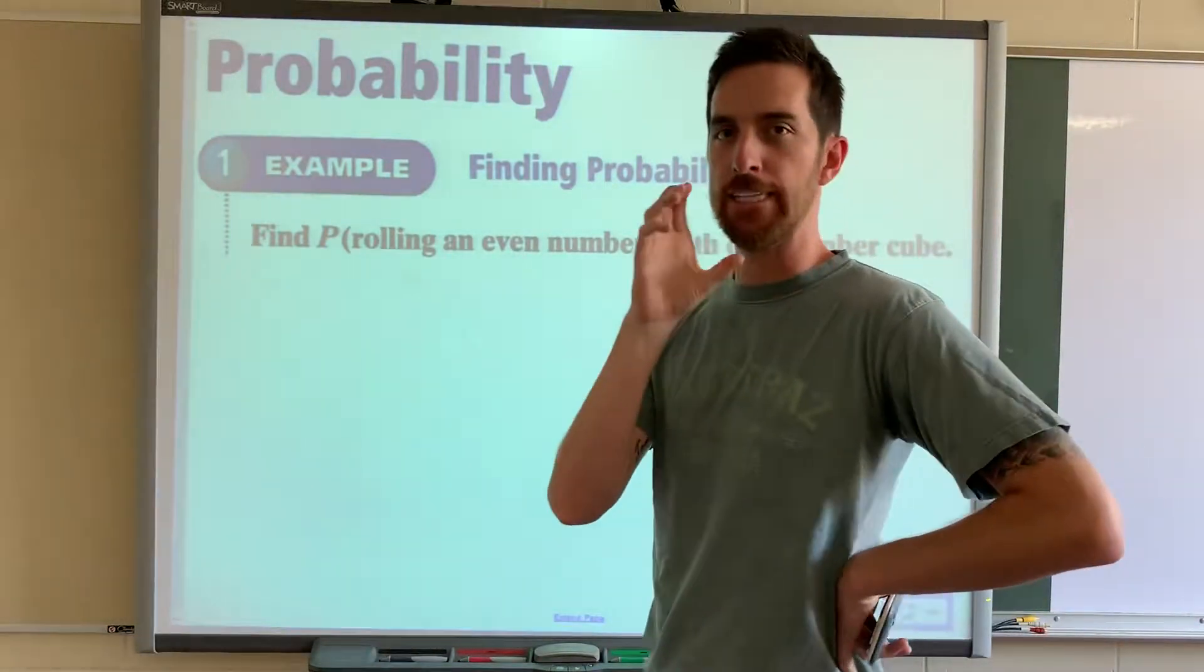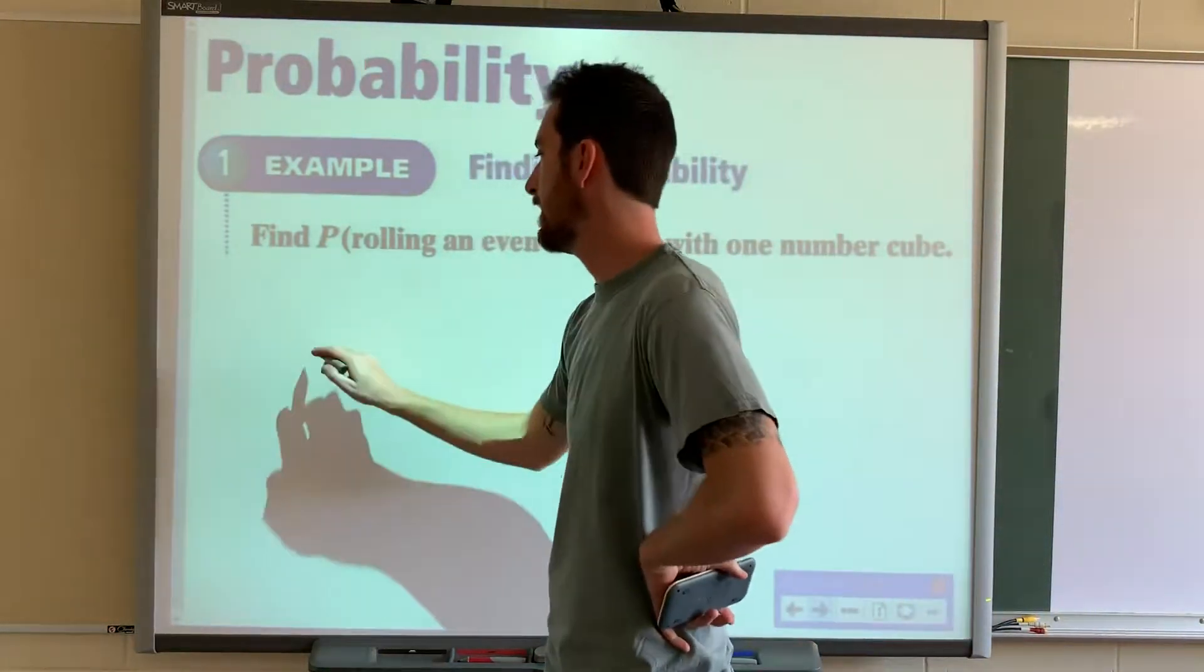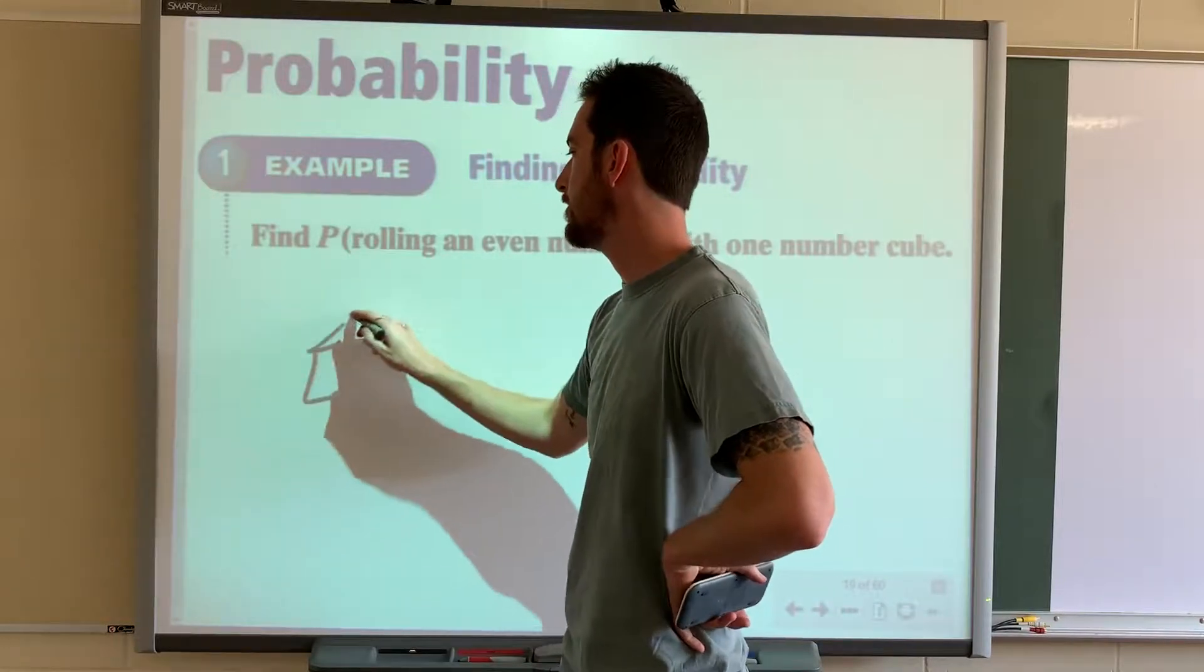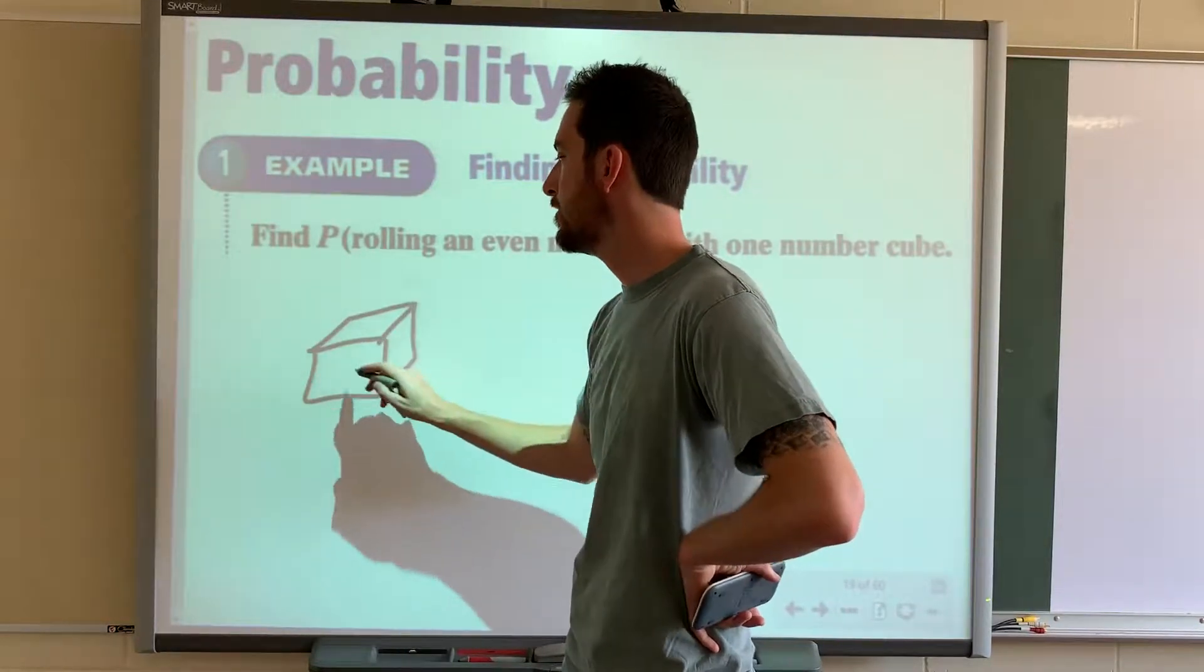A number cube is just a die, right? That die is six-sided. It looks like this. Oh yes, and it has numbers there.